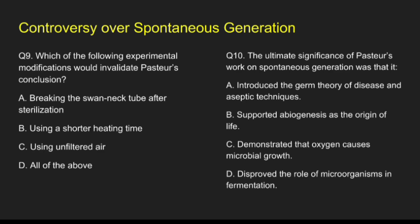Question 9: Which of the following experimental modifications would invalidate Pasteur's conclusion? Option A, breaking the swan neck tube after sterilization; Option B, using a shorter heating time; Option C, using unfiltered air; Option D, all of the above. The correct answer is option D, all of the above.